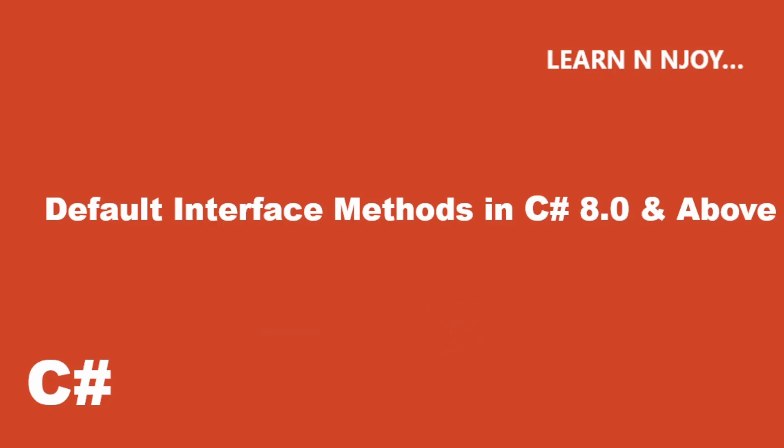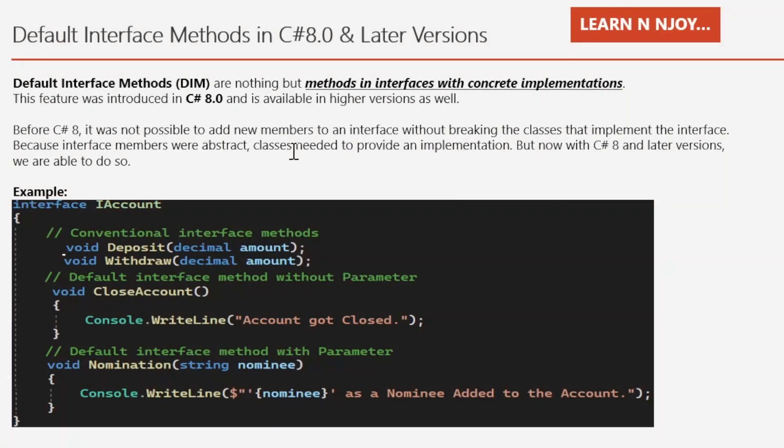Without any further delay, let's get started. Default interface methods in C# 8.0 and later versions — also known as DIM — are nothing but methods in interfaces with concrete implementation. These features were introduced in C# 8.0 and are available in higher versions as well.